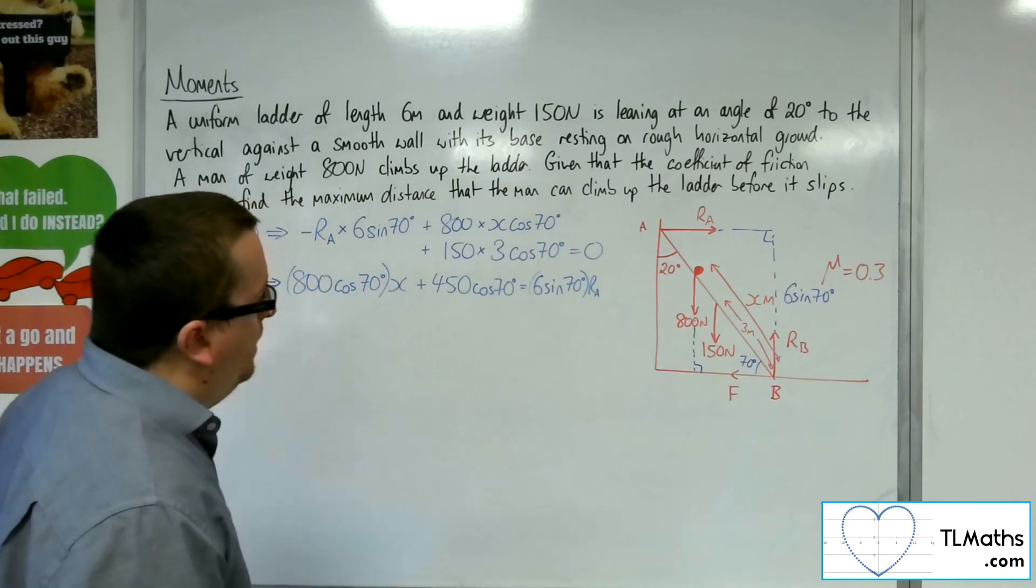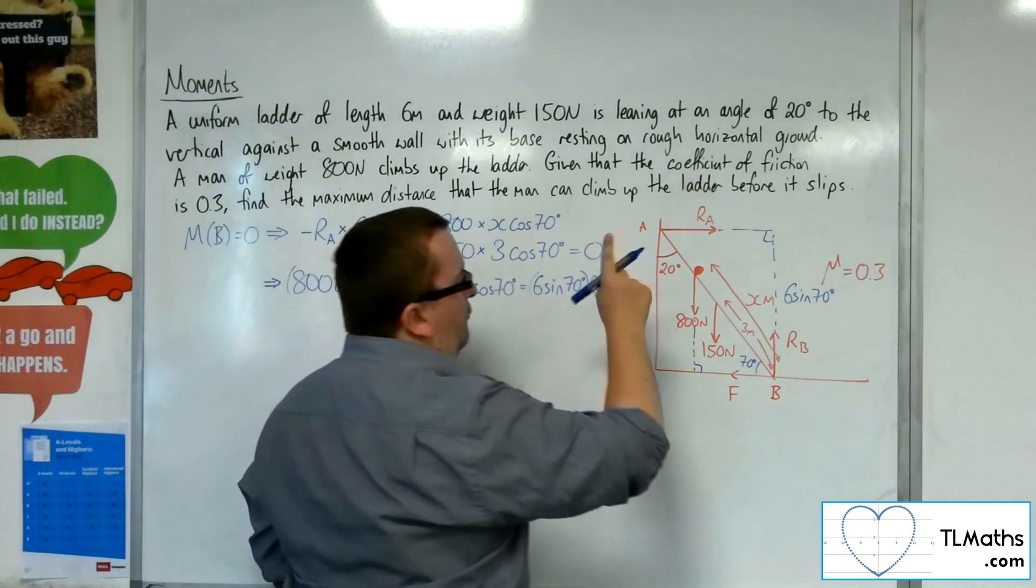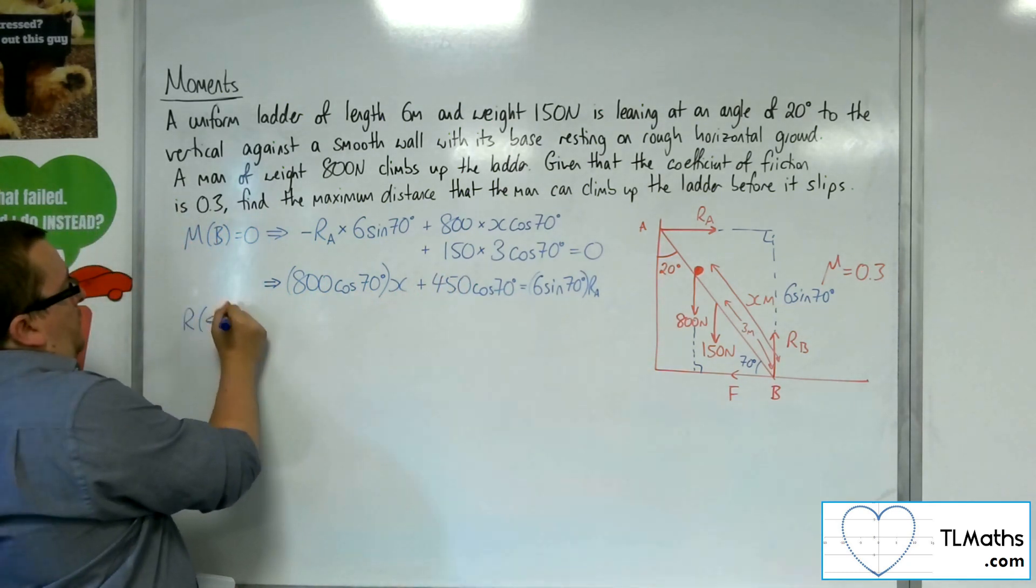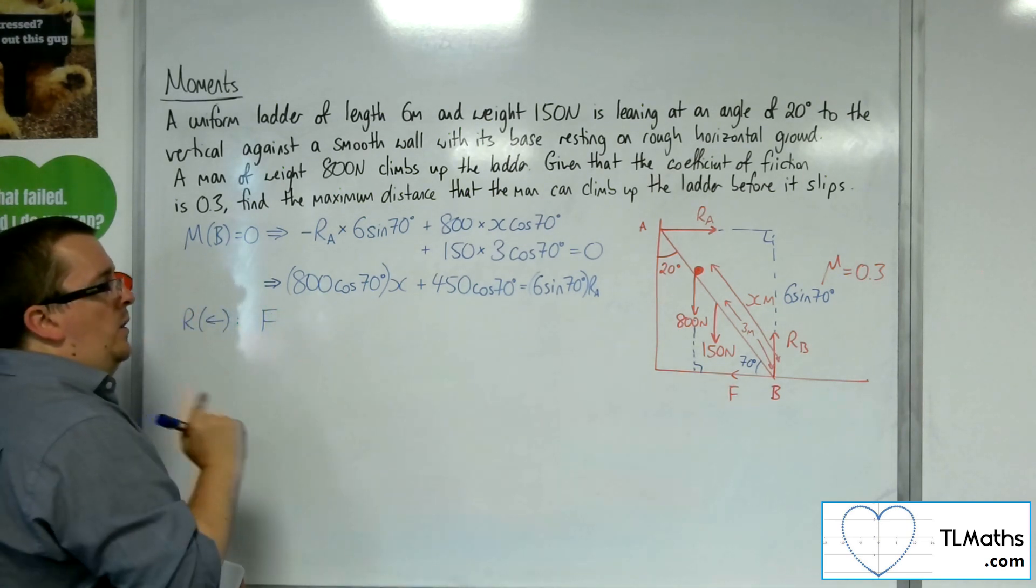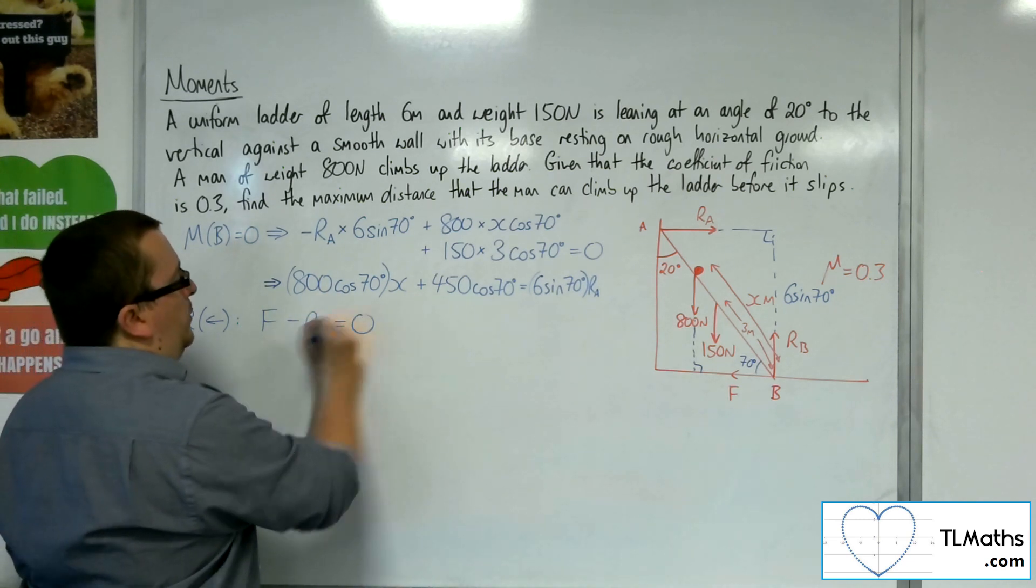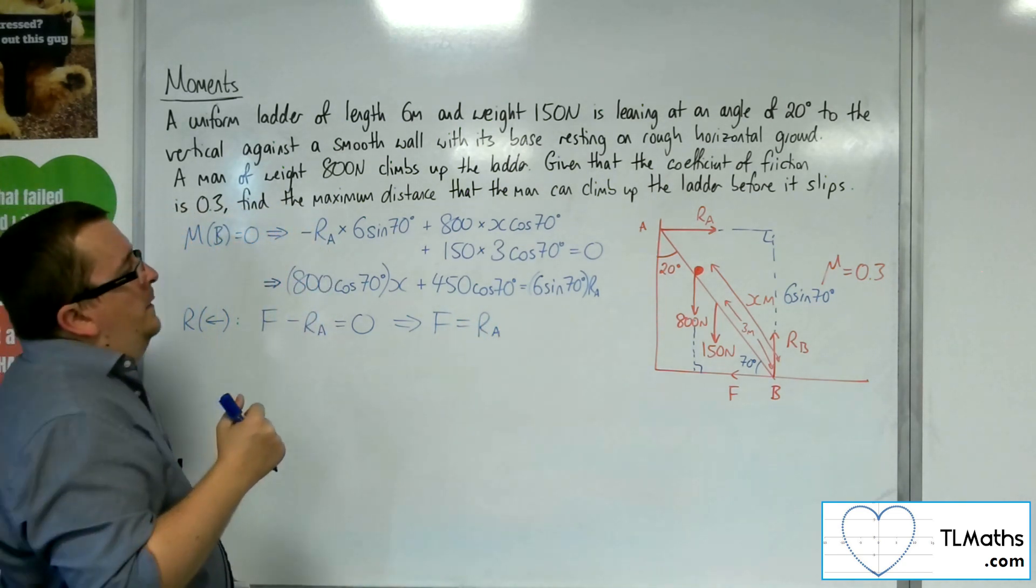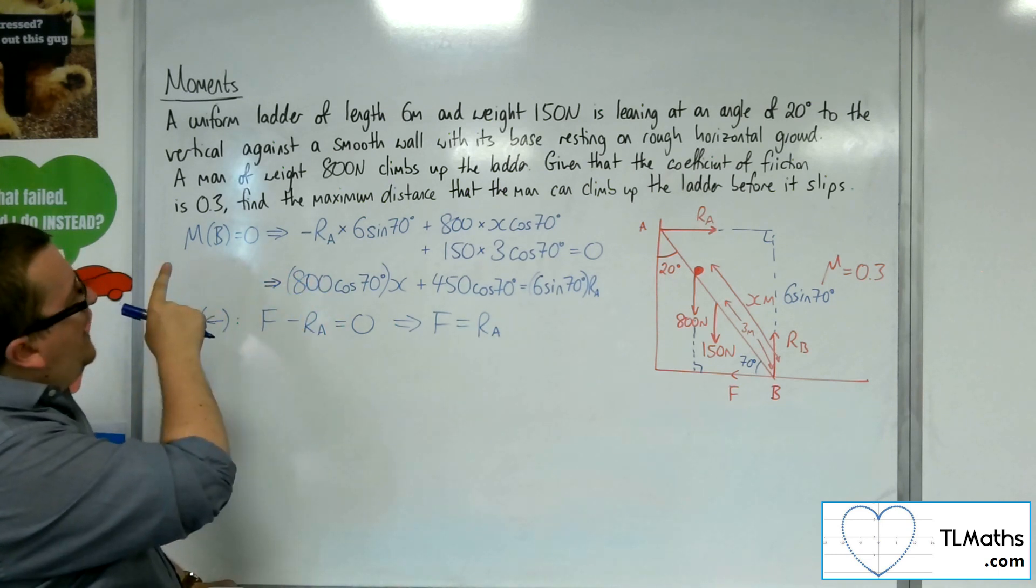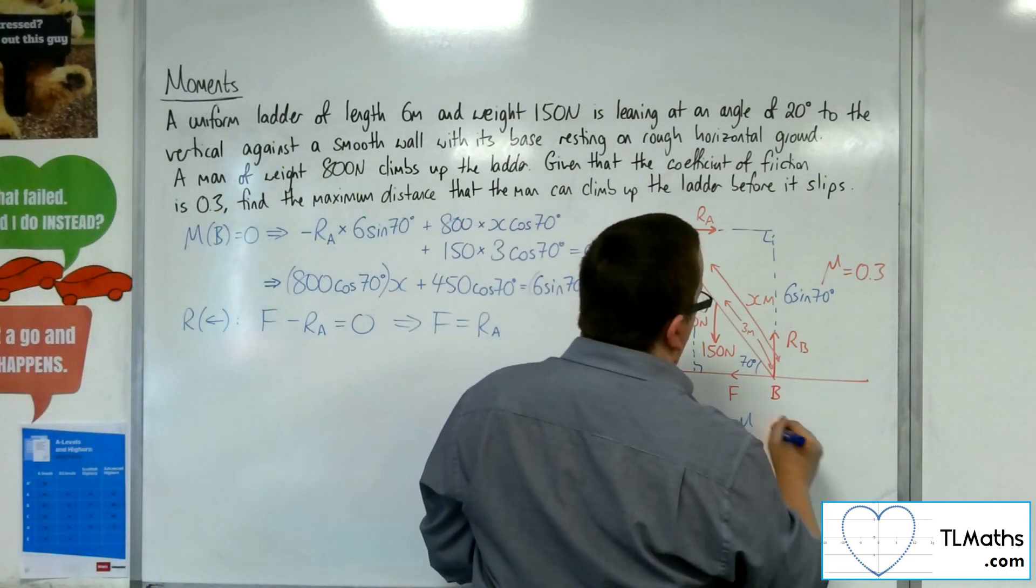Well, I also know that if I resolve forces, looking at horizontally here, if I resolve taking to the left as positive, then I've got the frictional force working to the left, and I've got RA working to the right. And that's got to be equal to 0. So I know that the frictional force has got to be the same as RA.